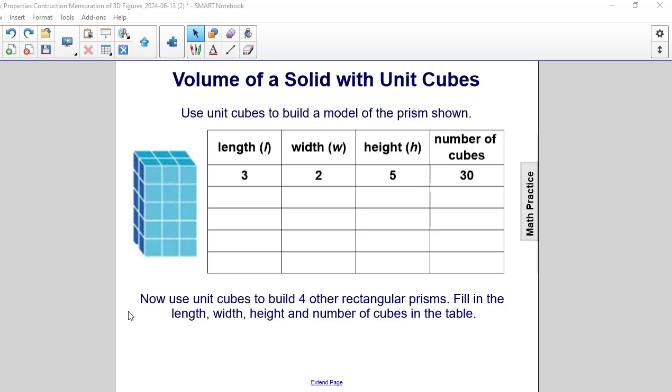Now we're going to use unit cubes to build four other rectangular prisms, and we're going to fill in the length, the width, and the height with the number of cubes in the table. For example, I may choose to build a model which has four unit cubes on the bottom going across, and the width would be three. So I'd have 12 unit cubes on the bottom with five layers for a total of 60 unit cubes.